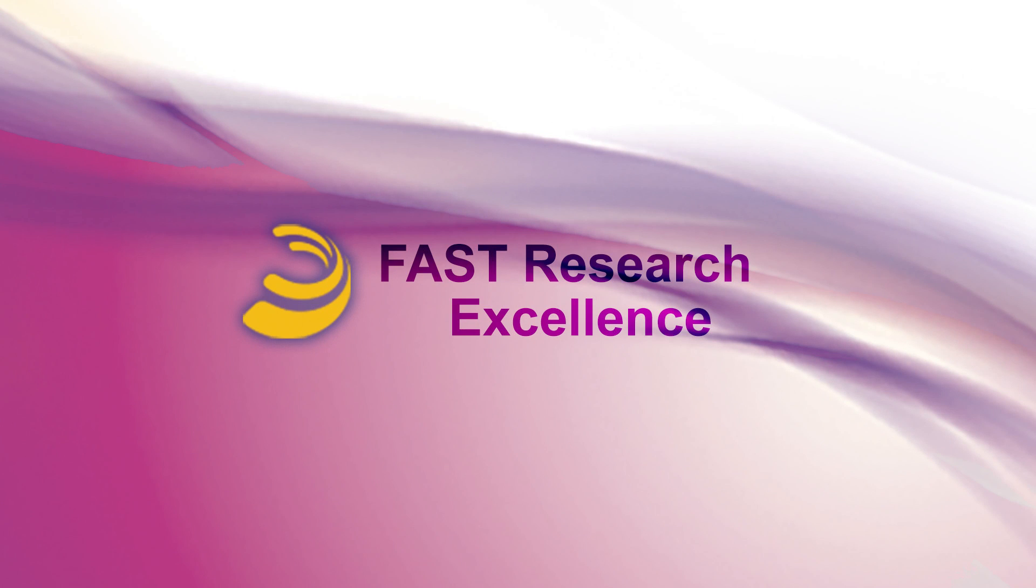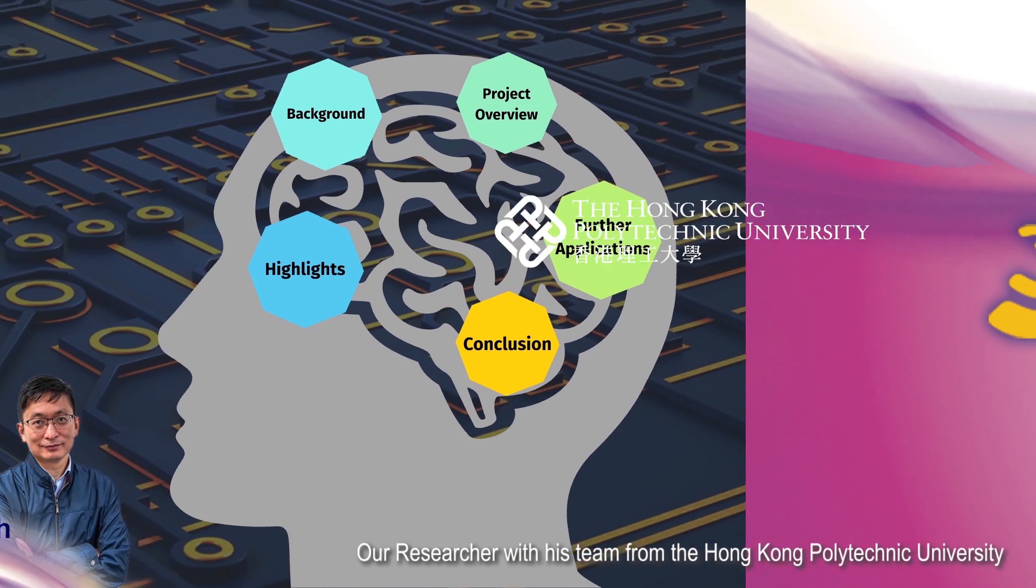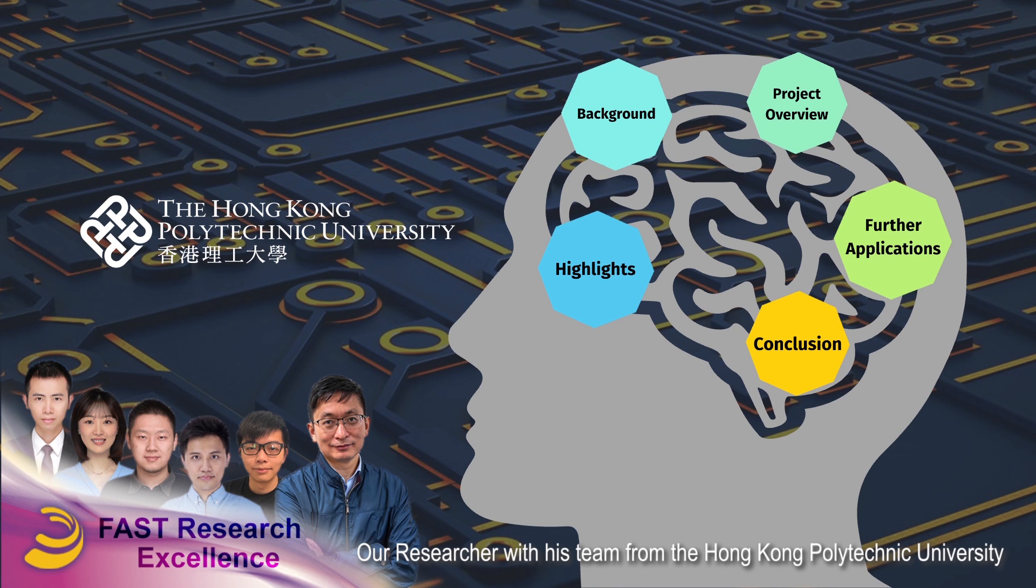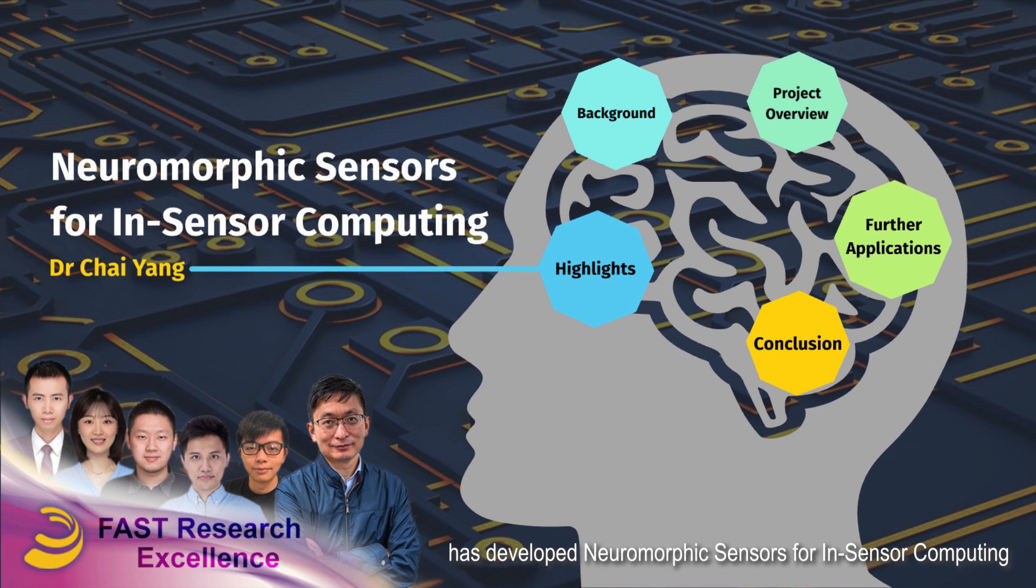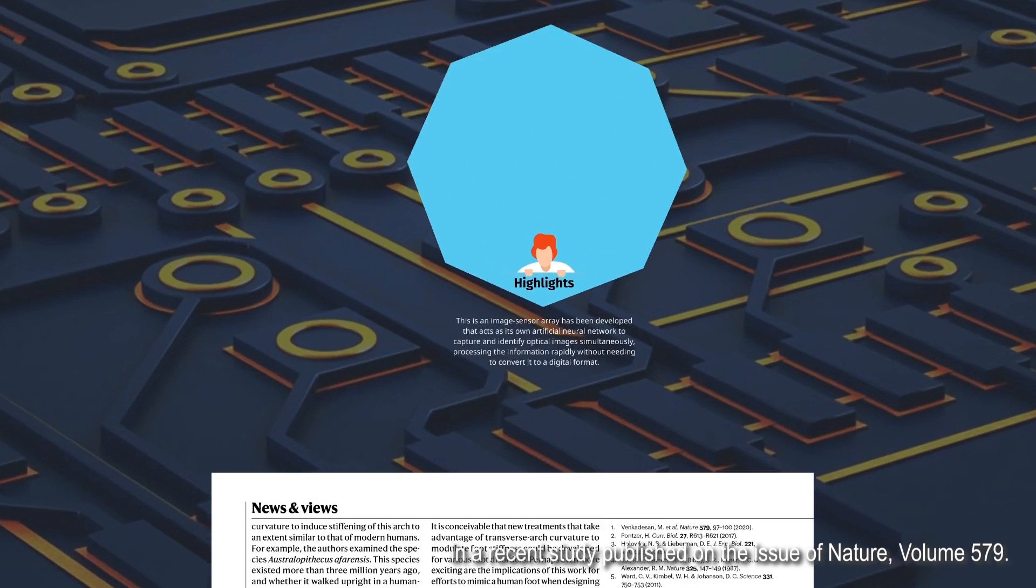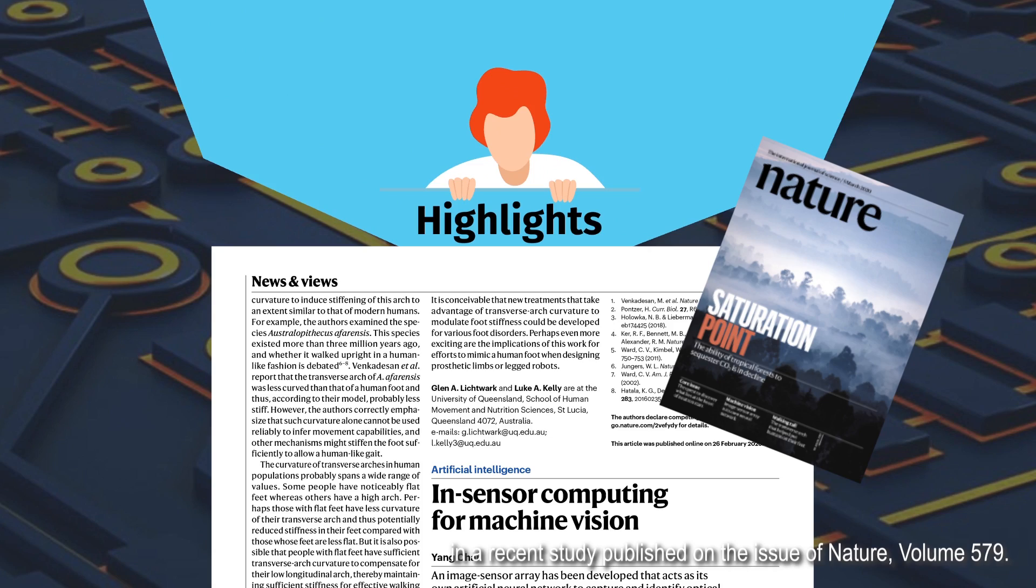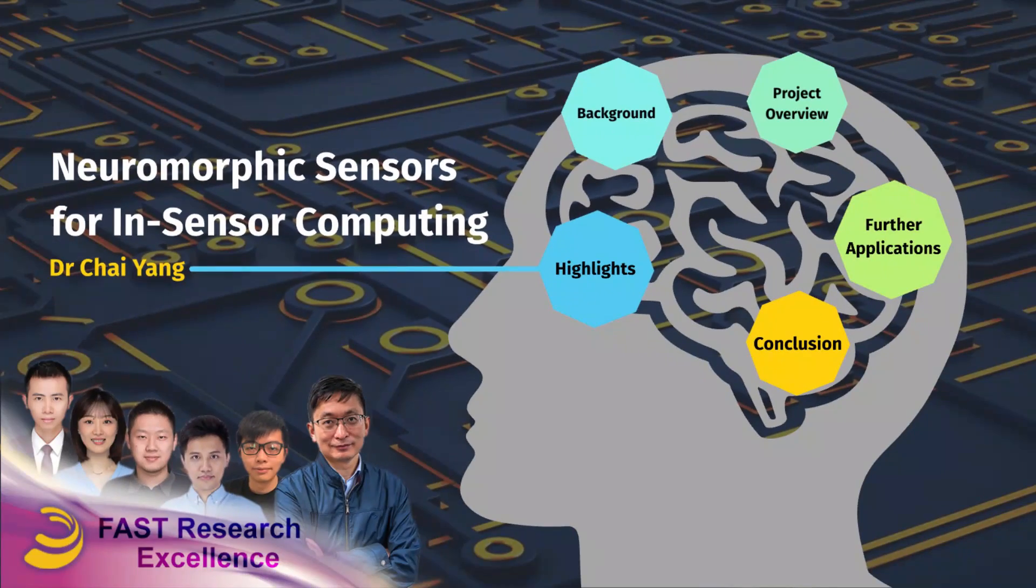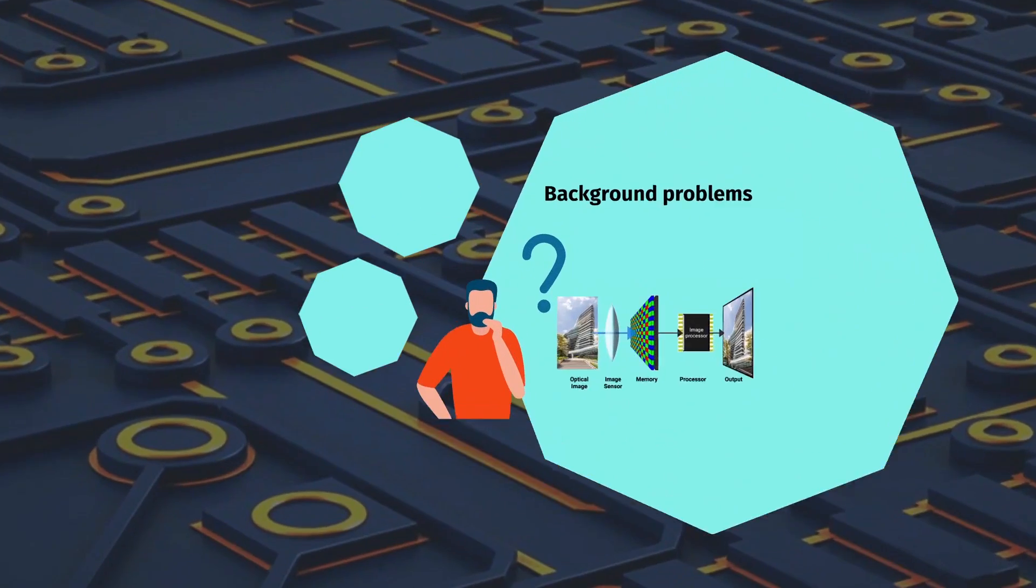FAST Research Excellence. A researcher with his team from the Hong Kong Polytechnic University has developed neuromorphic sensors for in-sensor computing. In a recent study published in Nature volume 579, there are some drawbacks of conventional artificial visual systems for image sensing and processing.